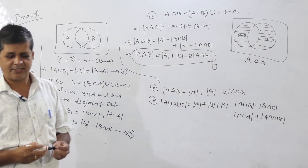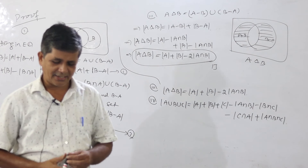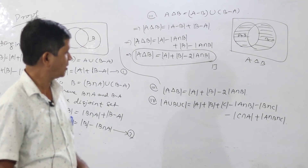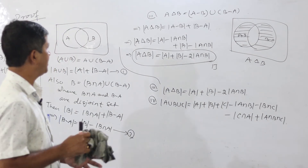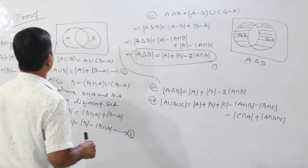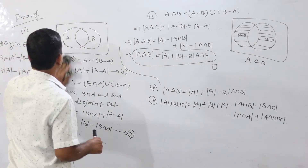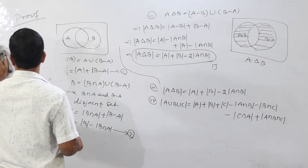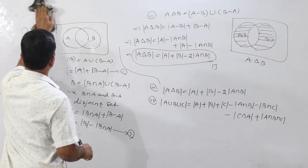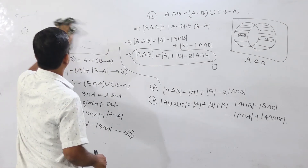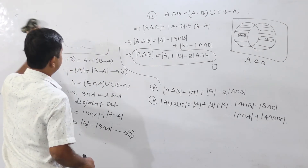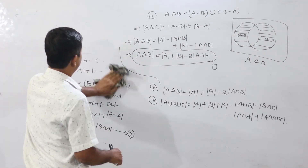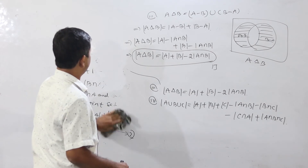This completes the third result. Now we move to the last result: cardinality of A union B union C, which we prove using the first result.